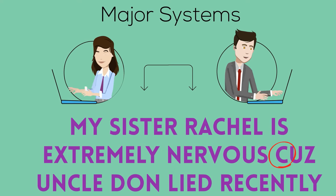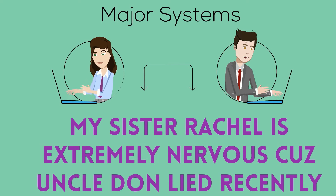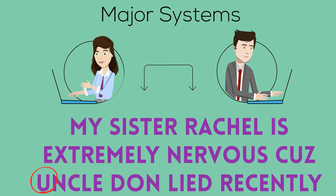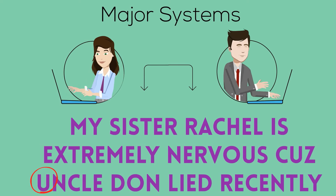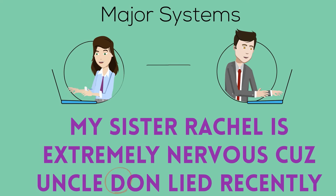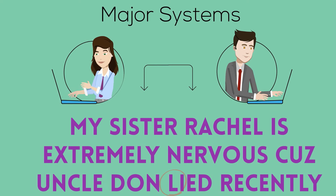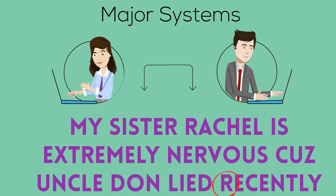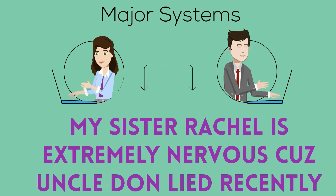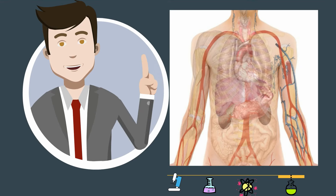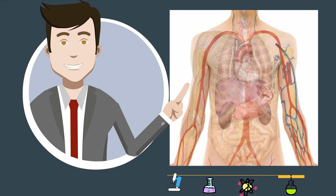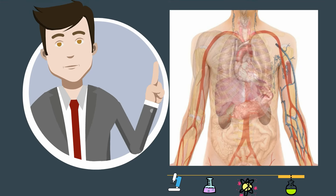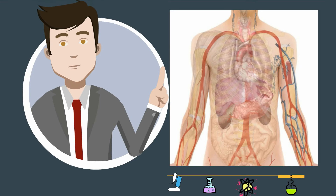C is cardiovascular, U is urinary, D is digestive, L is lymphatic, and R is reproductive. So there we go — two ways to memorize the 11 organ systems of the human body.